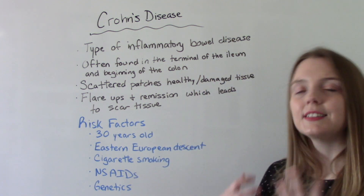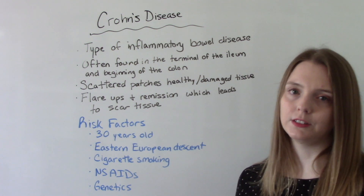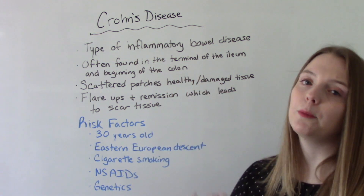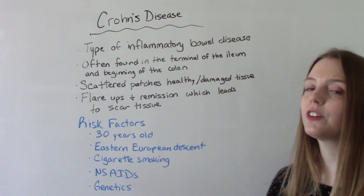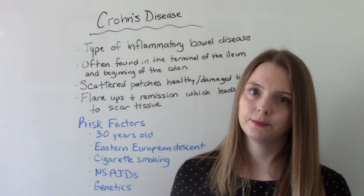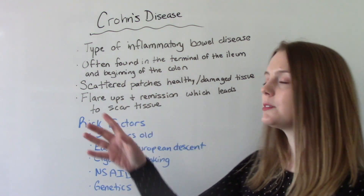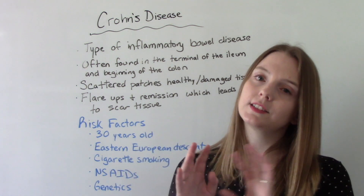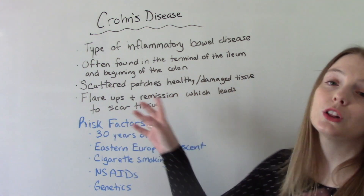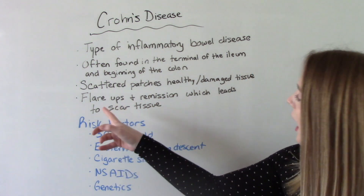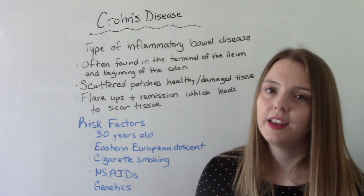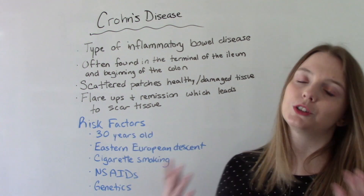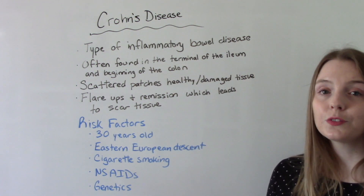Crohn's disease is a type of inflammatory bowel disease, so there's inflammation occurring. It typically occurs in the terminal ileum or the beginning of the colon, but can occur anywhere in the small and large intestine. It presents as scattered patches — sometimes called the cobblestone appearance — because there'll be pieces of tissue that are diseased next to pieces of tissue that are healthy. It is characterized by flare-ups and remission, and if you're having constant flare-ups, scar tissue can develop which causes even more problems.